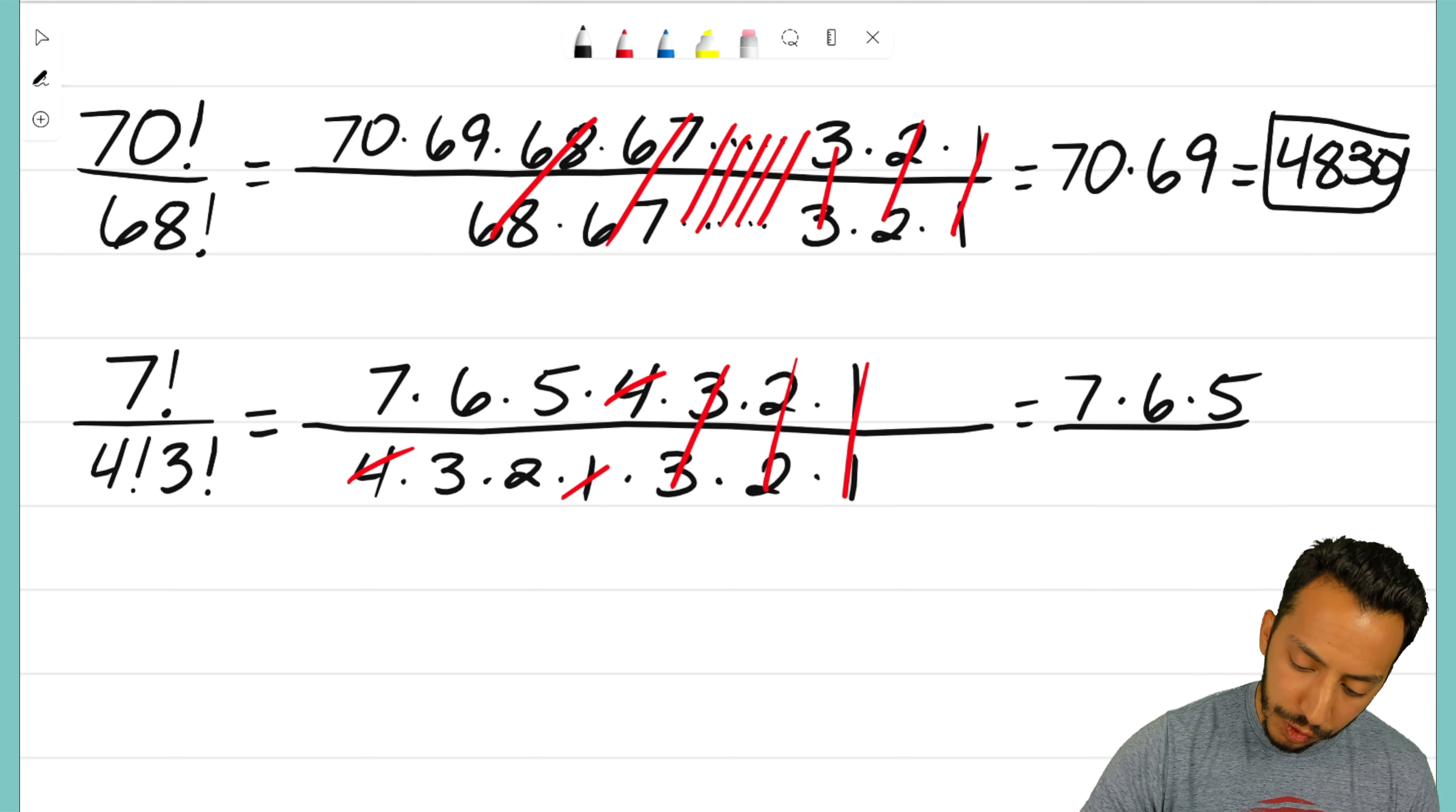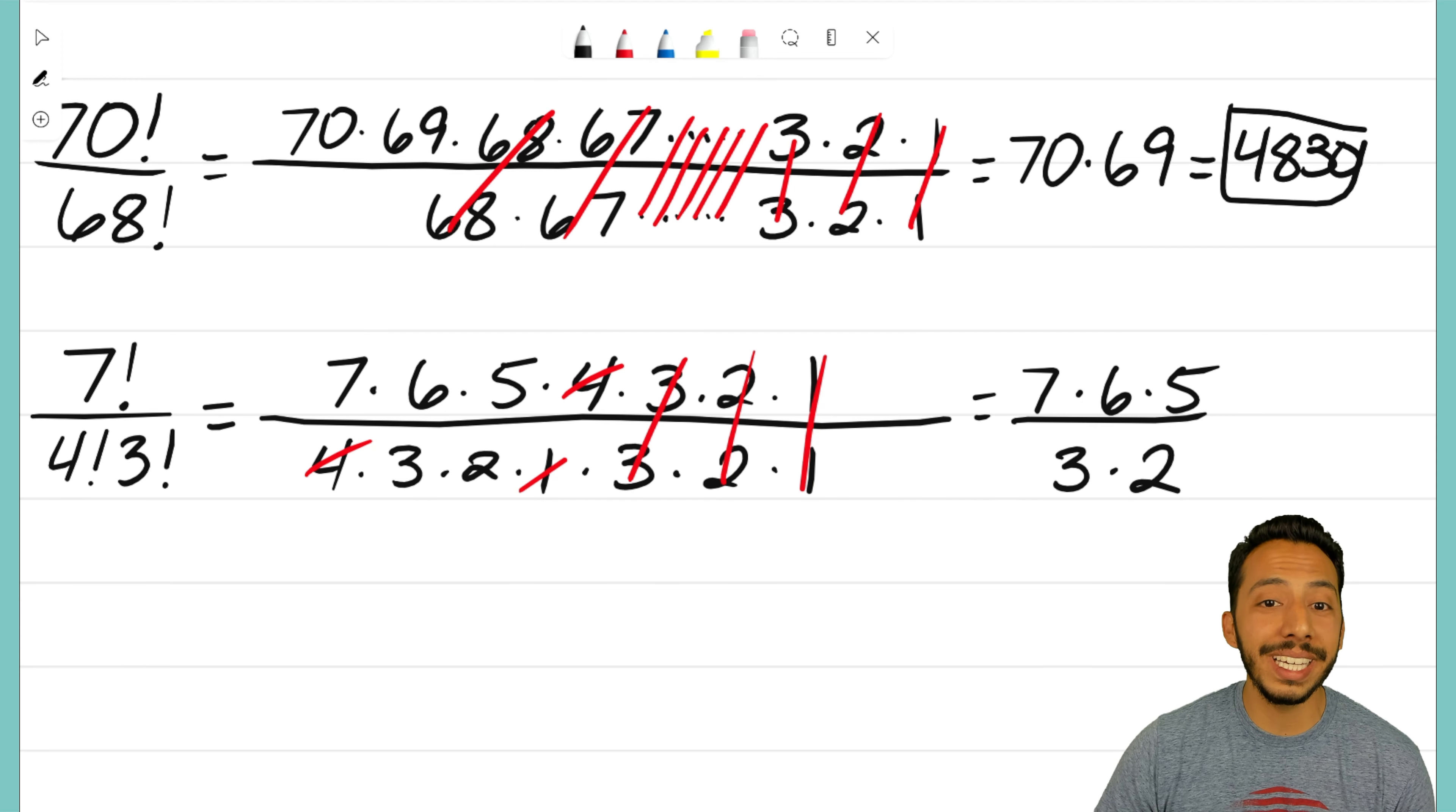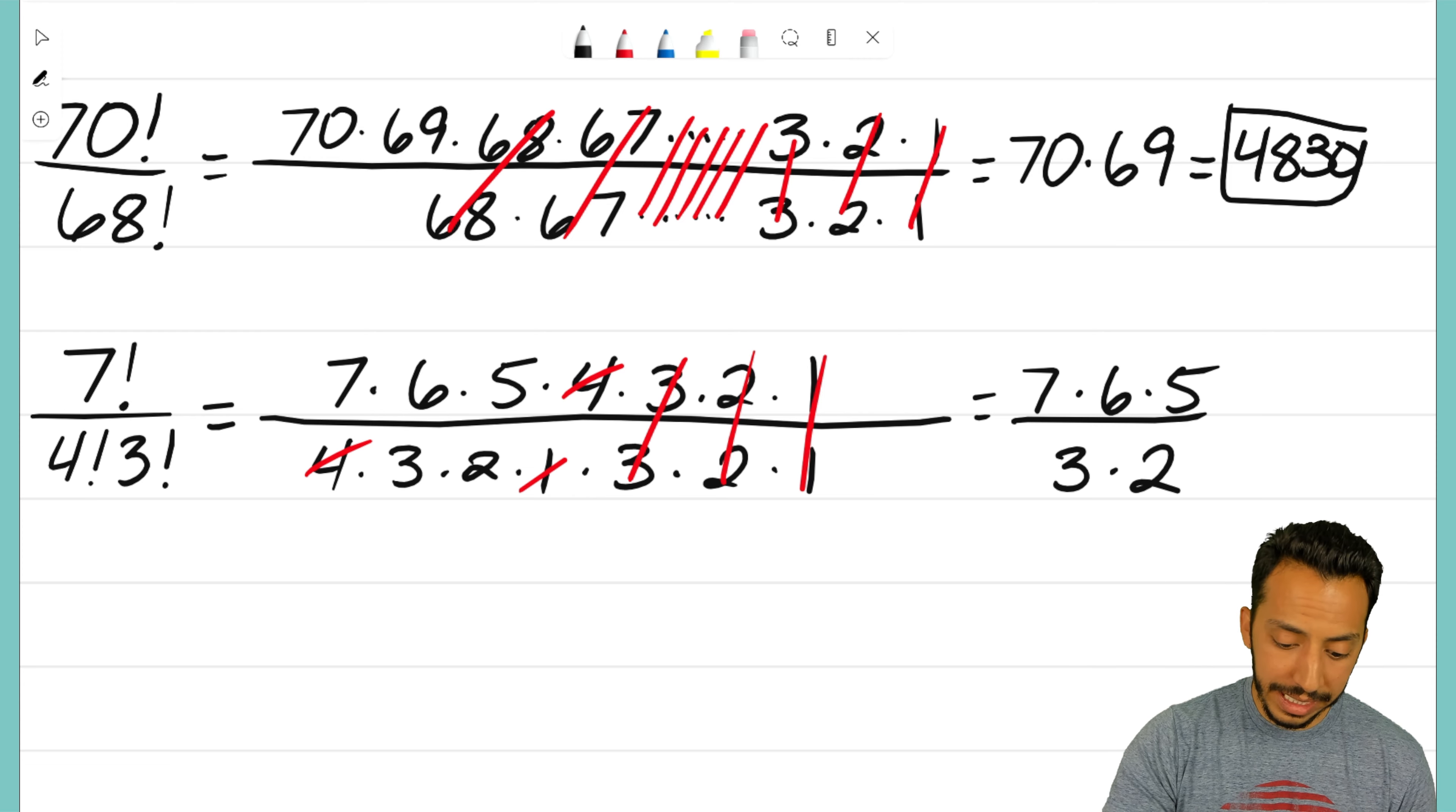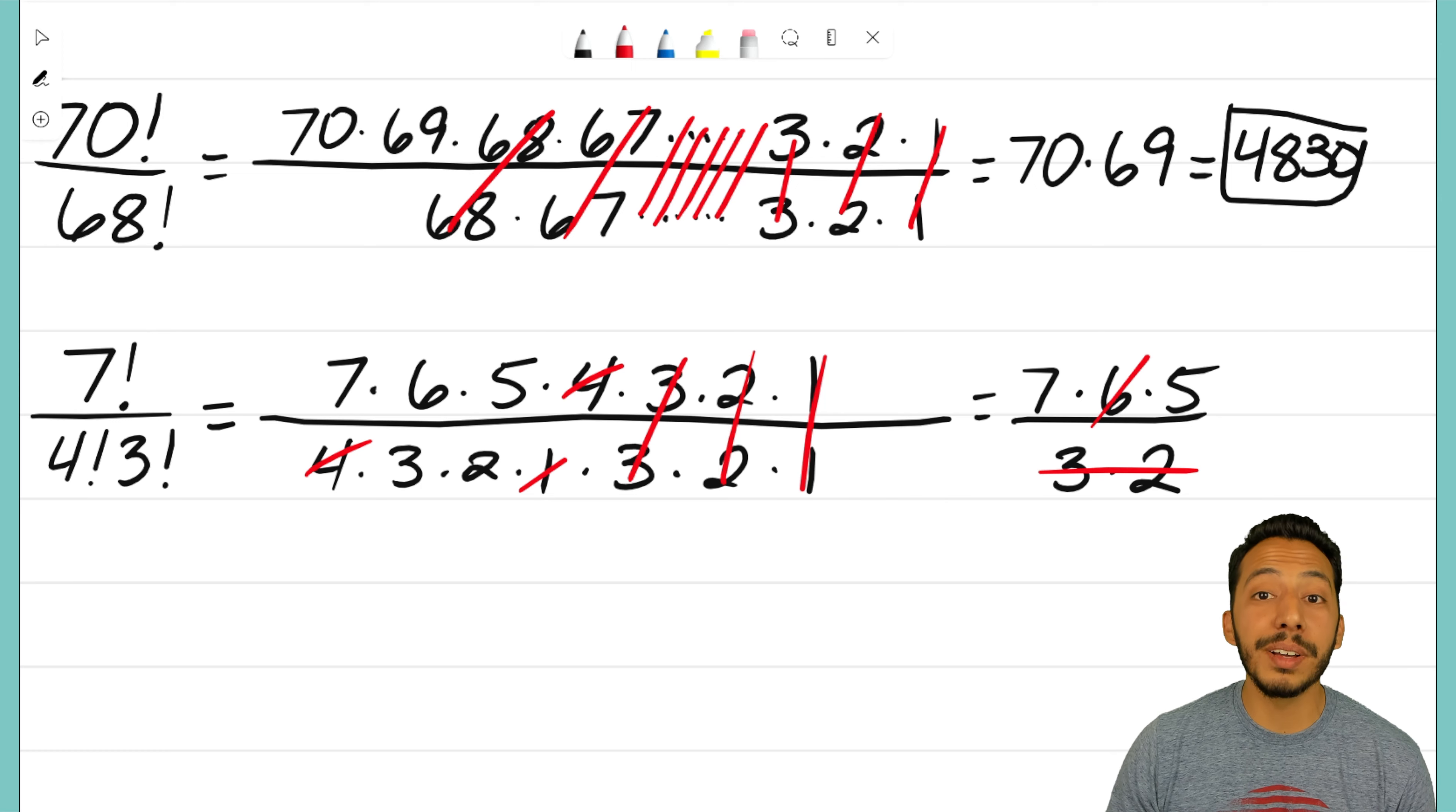I have three numbers on top—we end up with 7 times 6 times 5 over 3 times 2. Some of you might be seeing there is one final thing we can cancel out. Look at that denominator—3 times 2. Is 3 times 2 the same thing as 6? If 3 times 2 is just 6, well then I already have a 6 on top, so that means this and the bottom will cancel because those both represent 6.